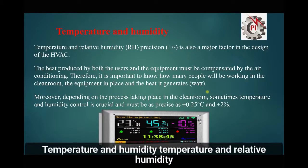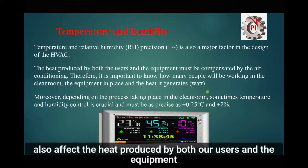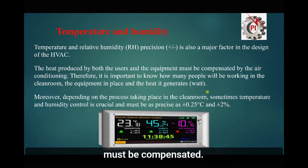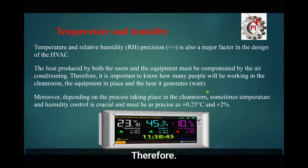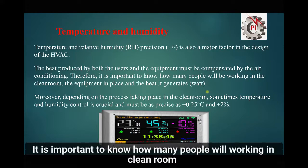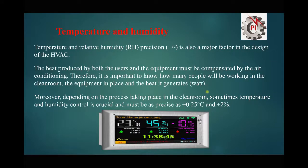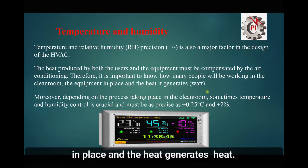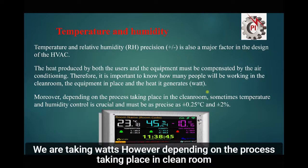Temperature and humidity: temperature and relative humidity precision is also a major factor in the design of the HVAC system. The heat produced by both the users and the equipment must be compensated by the air conditioning. Therefore it is important to know how many people will be working in the clean room, the equipment in place, and the heat it generates — normally measured in watts.